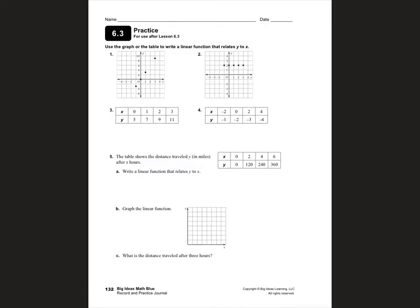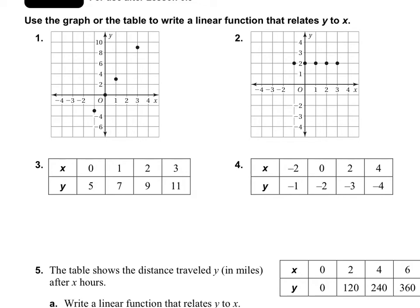Please open up your RPJs and turn to page 132. For problems 1 through 4, we need to write a linear function that relates Y to X. Remember, our linear function is Y equals MX plus B, where M is your slope and B is your Y-intercept. So if we take a look at number 1, we have a graph. You have to be a little bit careful here because this graph is tricky. Notice that the Y-axis is counting by 2s: 2, 4, 6, 8, 10. But the X-axis is only counting by 1s: 1, 2, 3, 4.